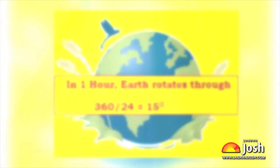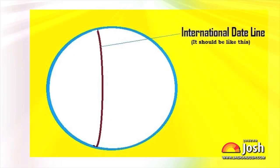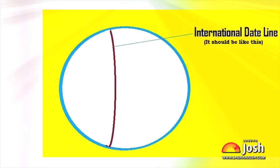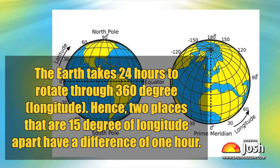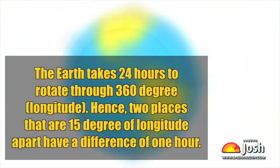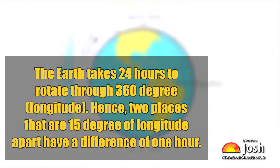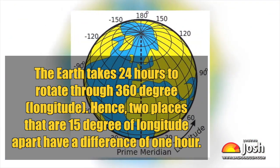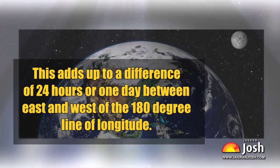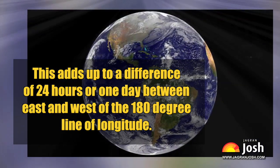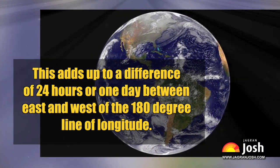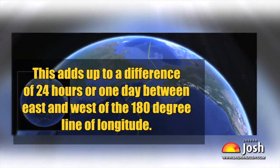Next, let's understand how we determine the time and date of a place. The earth takes 24 hours to rotate through 360 degrees. Hence, two places that are 15 degrees of longitude apart have a difference of 1 hour. We all know that the sun rises in the east and sets in the west. This adds up to a difference of 24 hours, or 1 day, between the east and west of the 180-degree line of longitude.